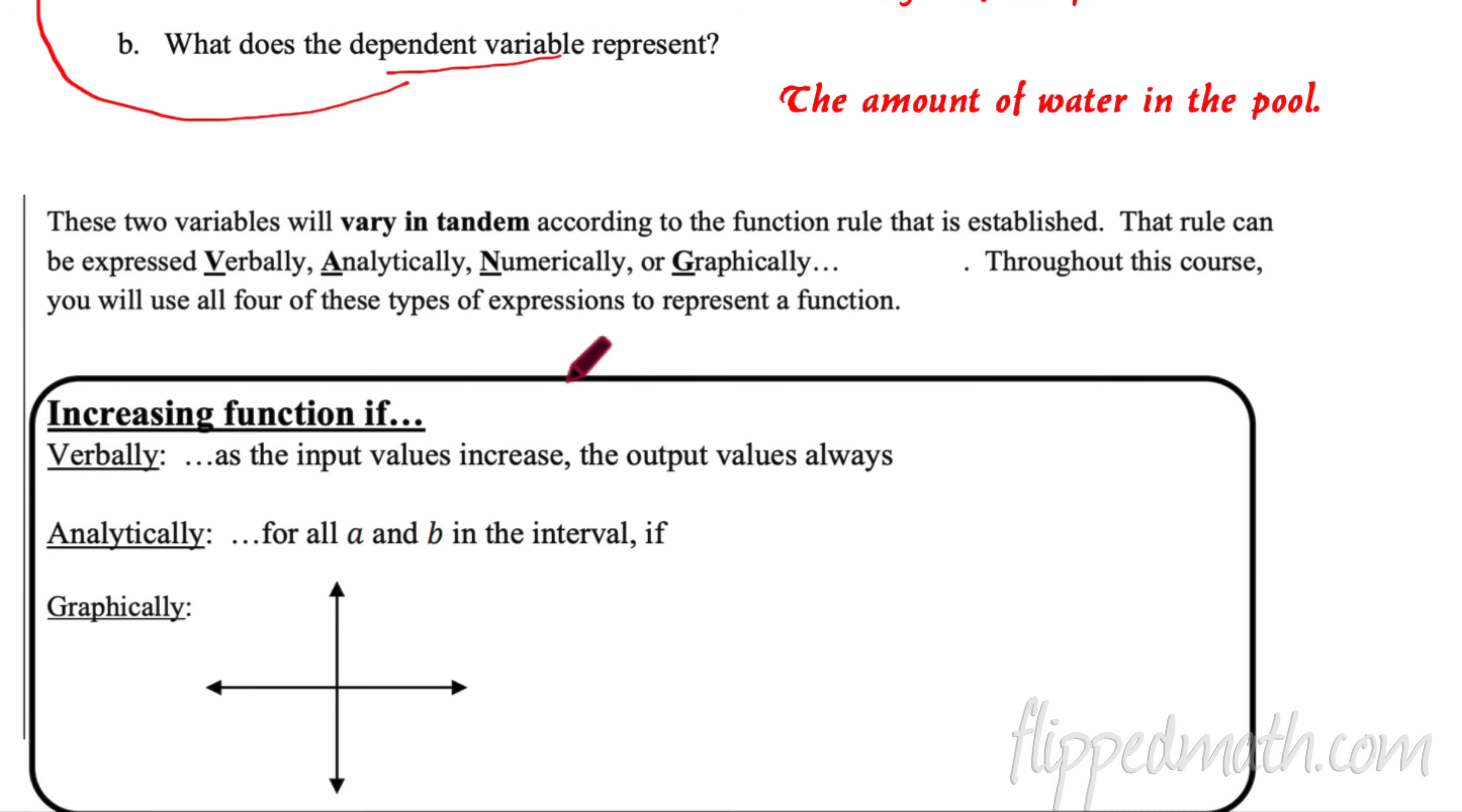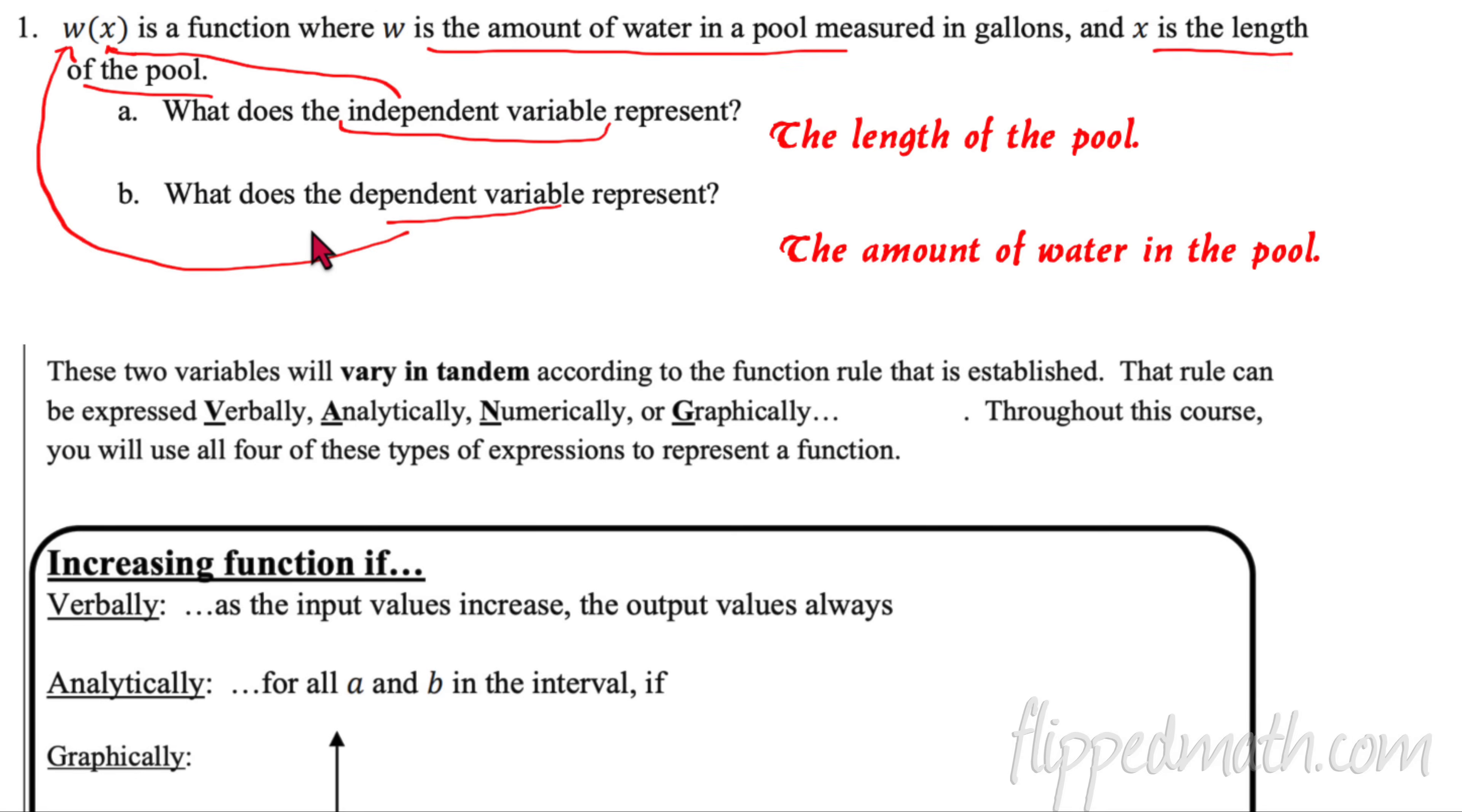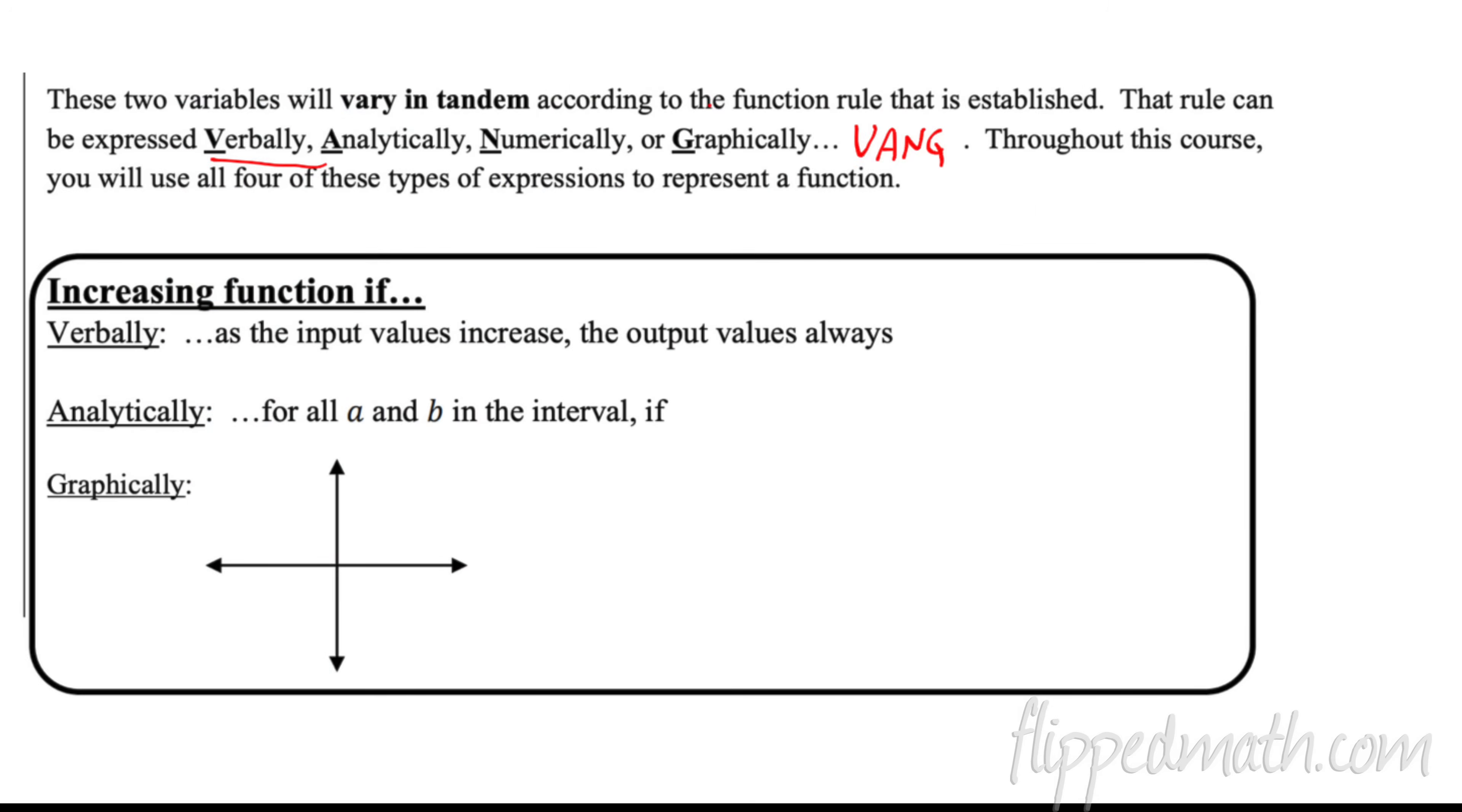Well, that brings us to the lesson name here, varying in tandem. These two variables will vary in tandem according to a function rule that's established. So they have to tell you a rule. Now, how do they tell you this rule? Well, the rule can be expressed verbally, analytically, numerically, or graphically. Now if you notice, we're going to take the first letters of all those and we're going to call it VANG. And that's going to remind us of the four different ways we can represent a function. Y'all going to be vampires. Can you imagine if they made that into a movie or a book? A bunch of teenagers running around the forest looking for vampires. How can you express these functions verbally, analytically, numerically, graphically? We're looking under trees and whatever for them. It's about the worst book ever. That's the worst book idea ever, I think.